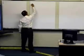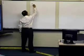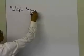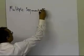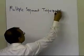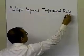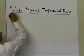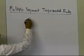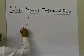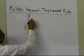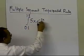In this segment, we're going to derive the multiple segment trapezoidal rule. So let me take the example: we have the integral going from 0.1 to 1.3 of 5x e to the power minus 2x dx.